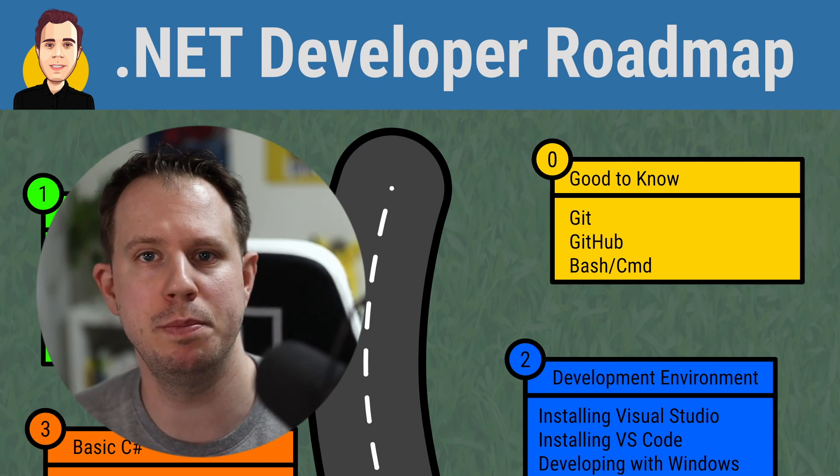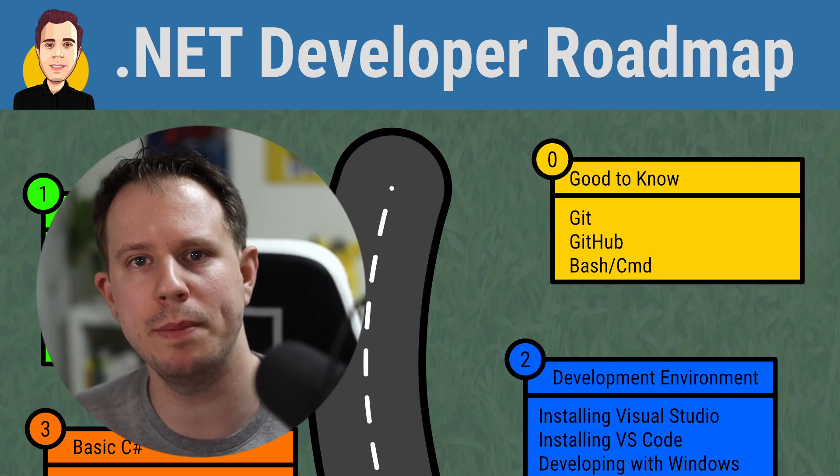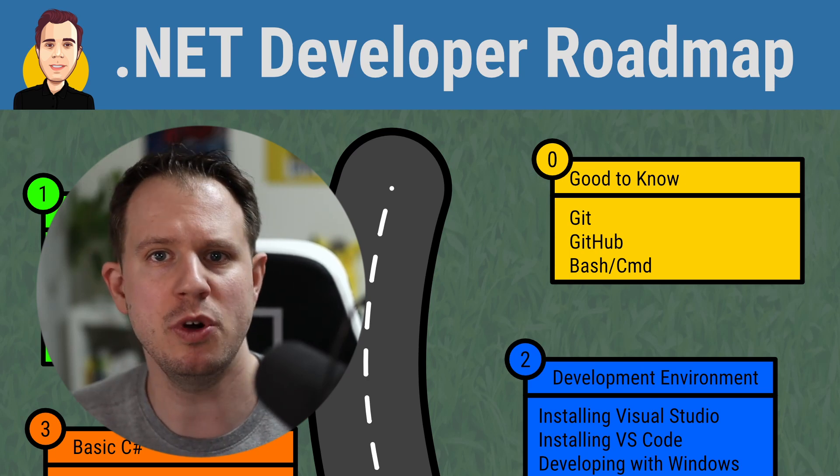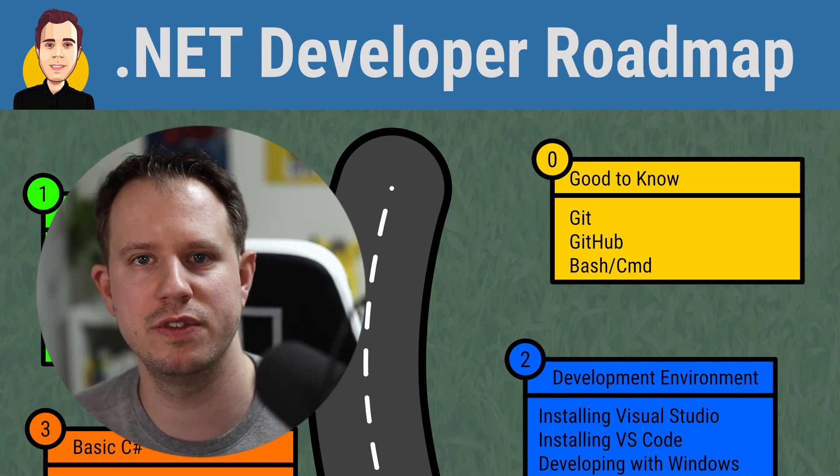Learning about HTTP and other web protocols, algorithms, data structures and much more is important when you want to become a software developer. However, the goal of this roadmap is to focus on C# and .NET development. I put the topics in the order which I believe works best for developers new to the .NET platform.